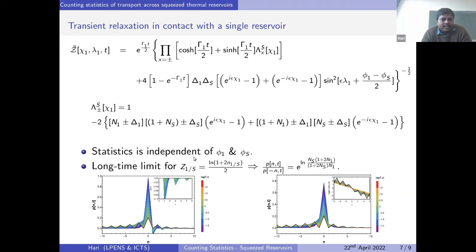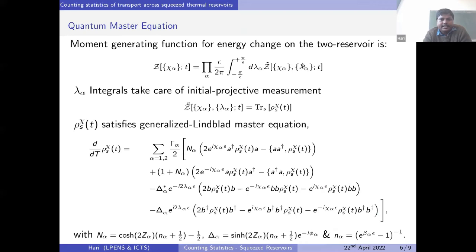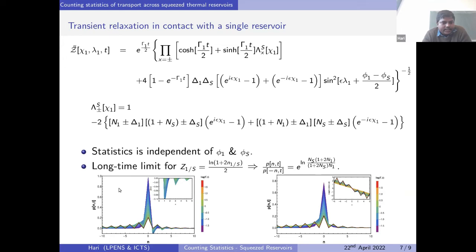In the long-time limit, Z-tilde only depends on Lambda-plus and Lambda-minus. It turns out that if you choose the squeezing in terms of some initial temperature in a very specific way, Lambda-minus becomes one, and Z-tilde only depends on Lambda-plus, which has a Gallavotti-Cohen-like symmetry, leading to an effective fluctuation theorem. Crucially, if one does not treat the initial projective measurement properly, the counting statistics can yield a distribution function that becomes negative at short times, which is unphysical. In the long-time limit, it becomes positive and independent of the initial projective measurement.